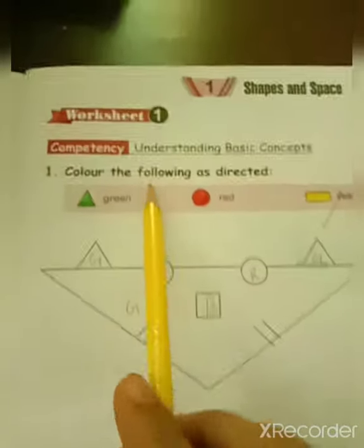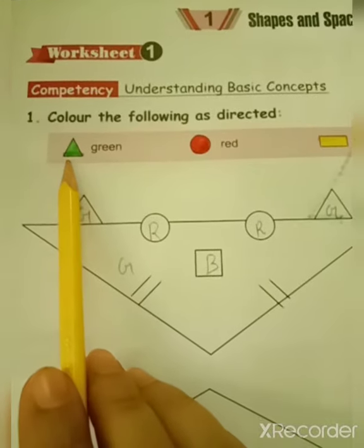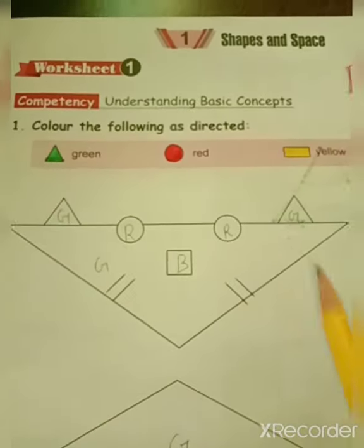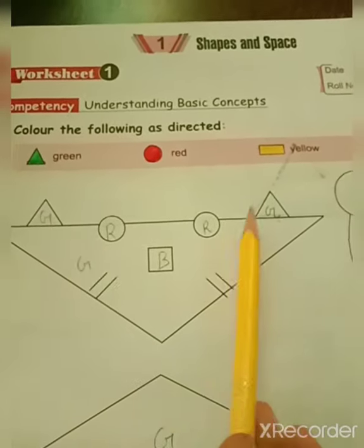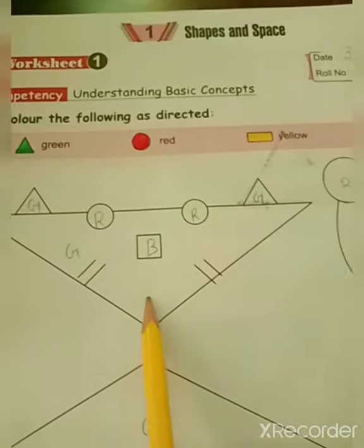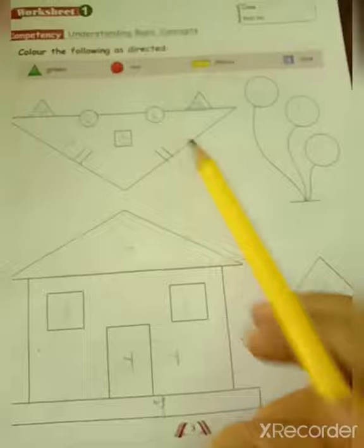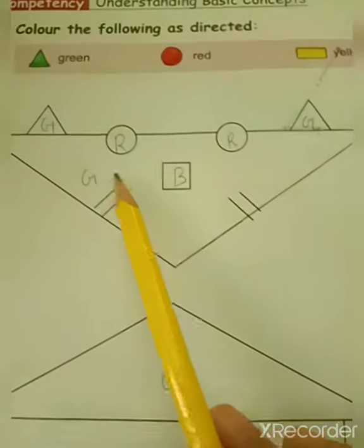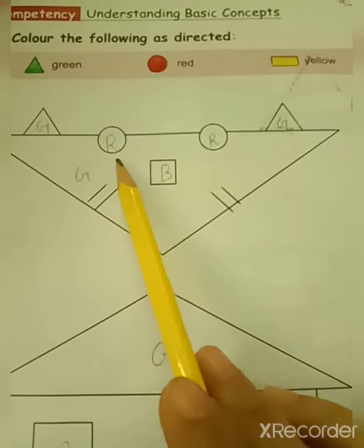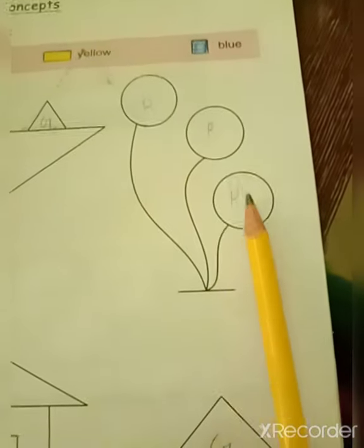As you can see, children, what is green? Wherever I have written G, what will you do? Green color. Then, red — circle with red color. So here you have to do red color, and here you have to do red color.